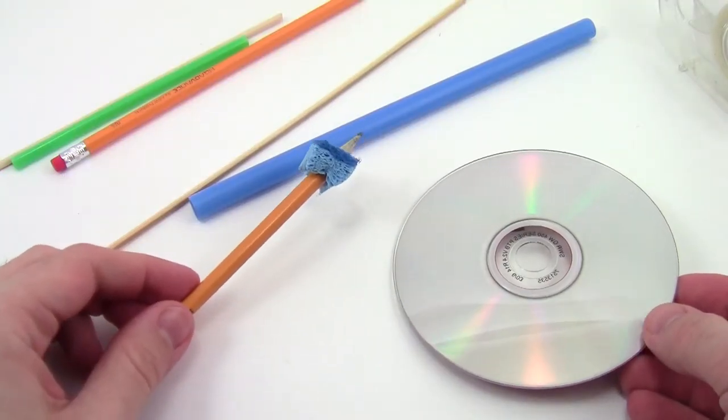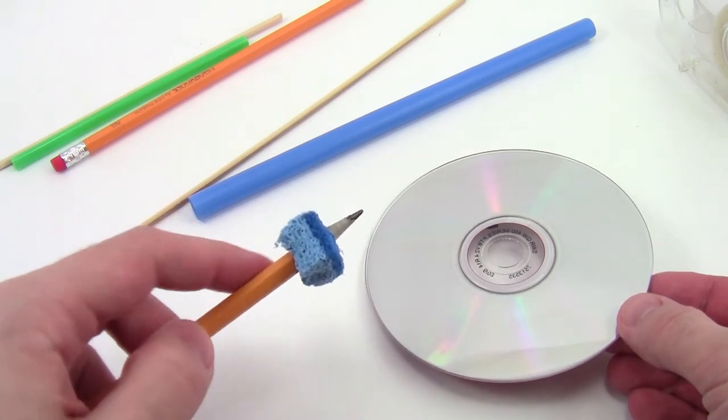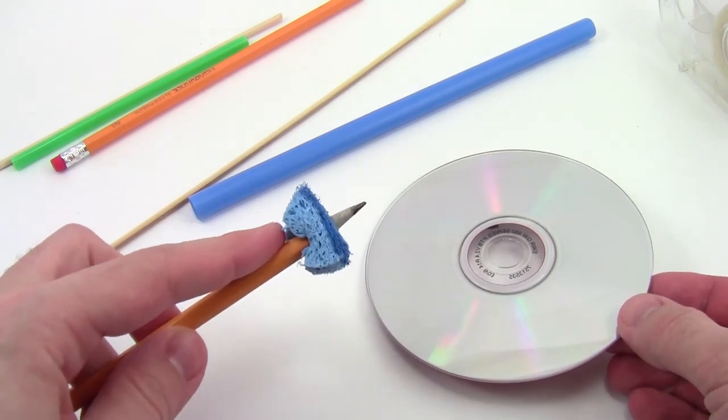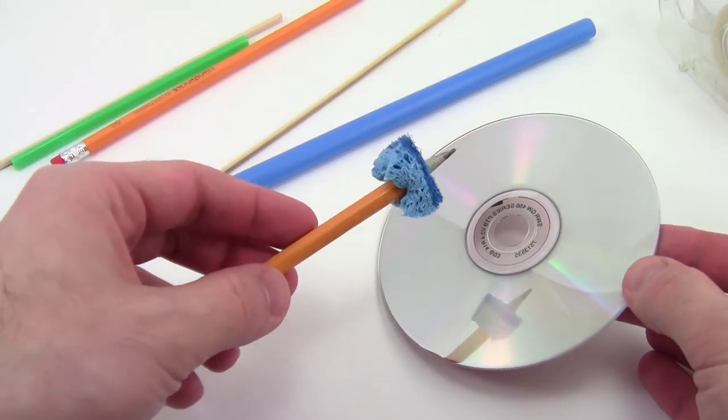CDs can be a little more difficult to use as wheels because they already have a large hole in the center. Try poking a pencil or a skewer through a piece of sponge or a ball of modeling clay and then force this into the hole to center the wheel on the axle.